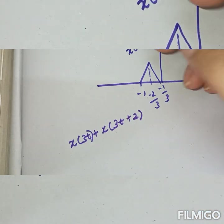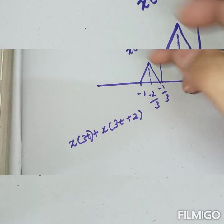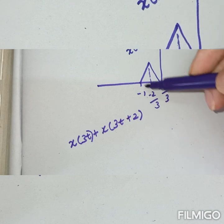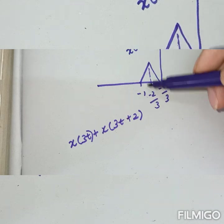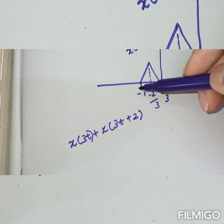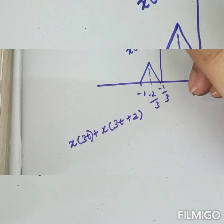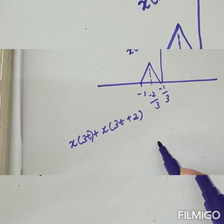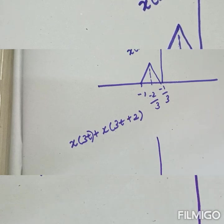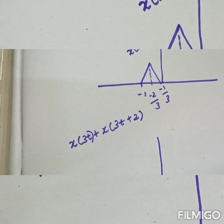For the addition, consider the time period after minus 1. After minus 1, x of 3t is 0, and x of 3t plus 2 is also 0. So for that region, the whole thing tends to 0.